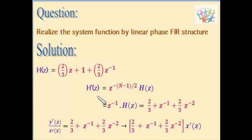H dash is written as z inverse of n minus 1 by 2 into H of z. Z inverse of H of z equals 2/3 plus z power minus 1 plus 2/3 z power minus 2.